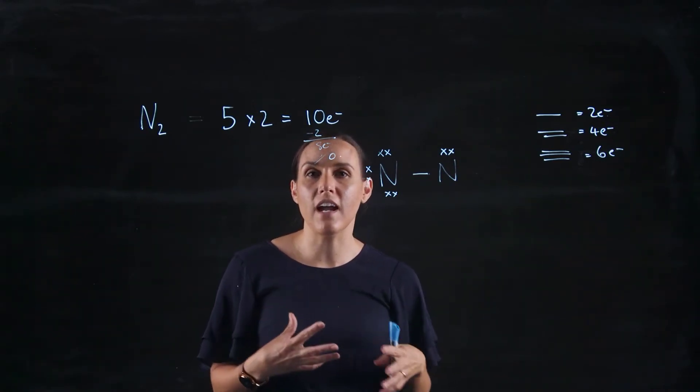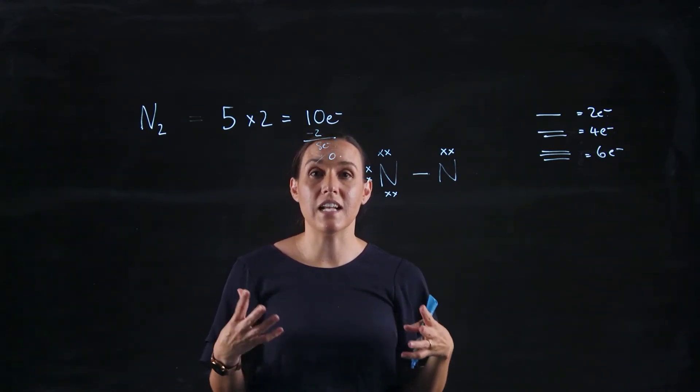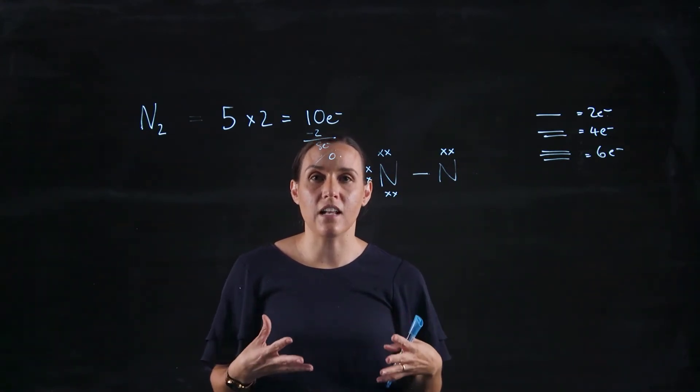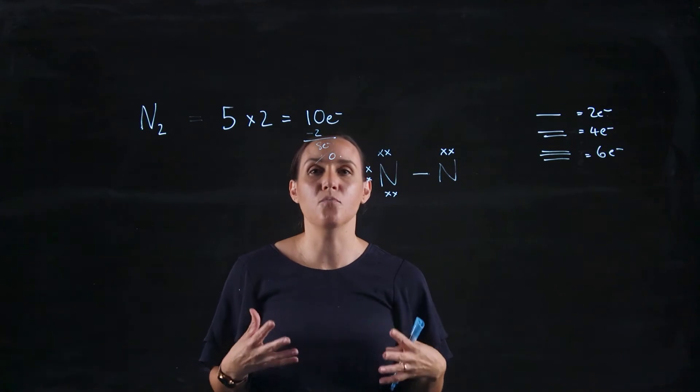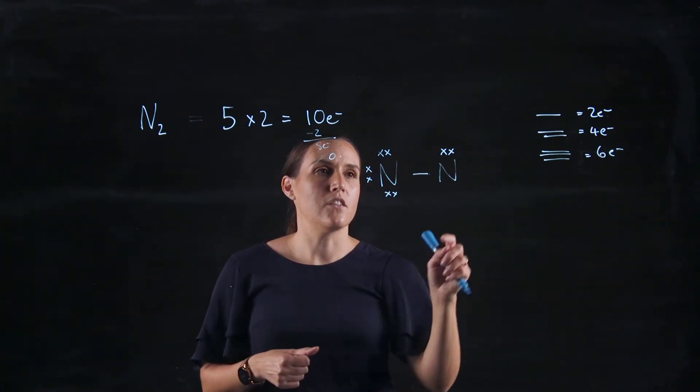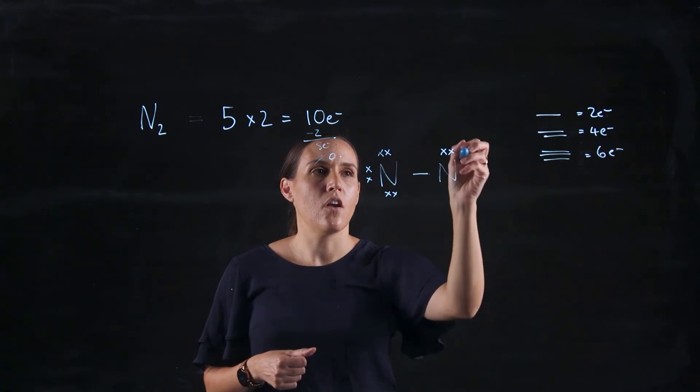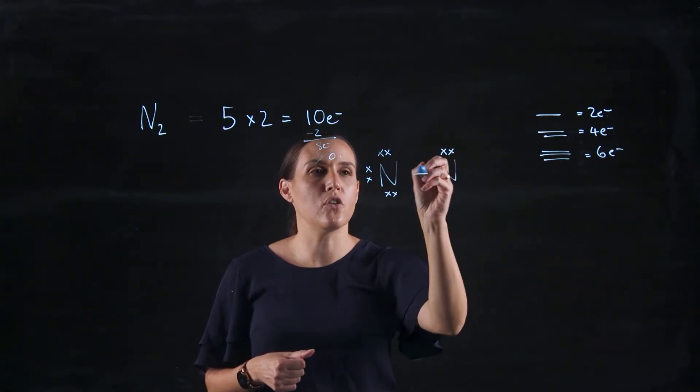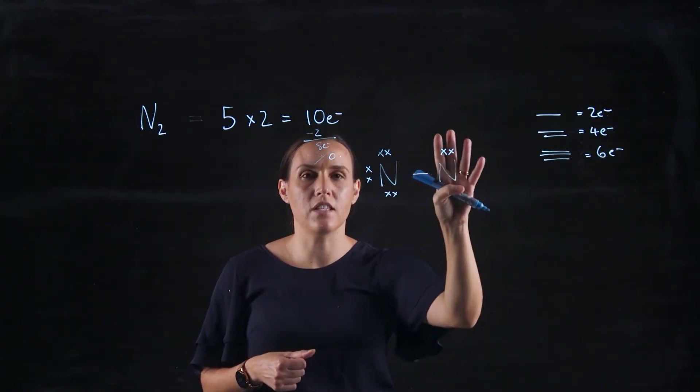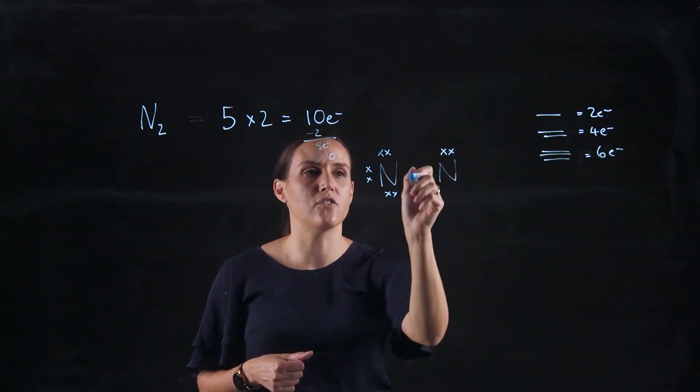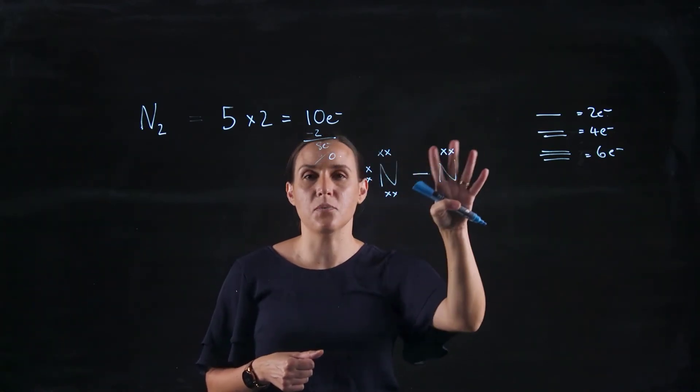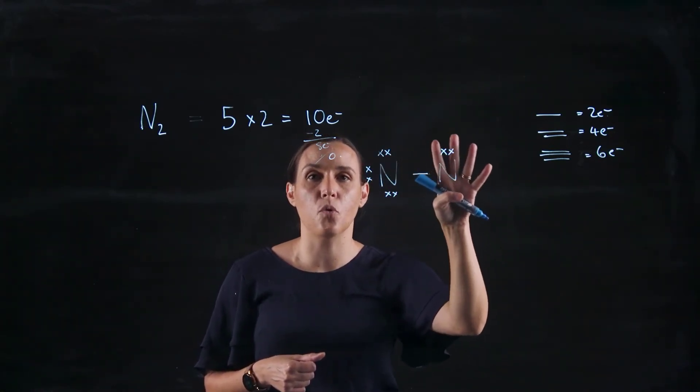What I need to do now is rearrange those electrons so that it satisfies the octet for both of those nitrogens, because nitrogen is one of those elements that needs to have eight. It can't have more, it can't have less, it needs to have those eight electrons. So we've got two that are on this nitrogen. We've got two that are shared. So it's got two, four for this nitrogen here. The other nitrogen has two, four, six, eight electrons. So that's happy, but this one's only got four, so it needs four more.